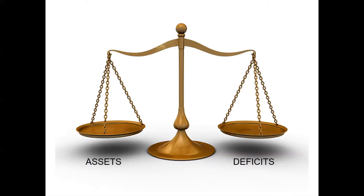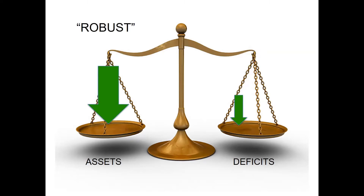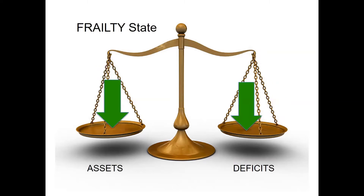Frailty is evident in the context of stress. The balance scale is one of the oldest models of frailty — this is where the concept of deficits and assets actually comes from. When a person is more robust, assets far exceed deficits, so small stressors are insufficient to tip them over. In a person who has developed frailty there are more deficits and fewer assets — they may appear independent, but when that same stressor comes along it tips the balance more easily.